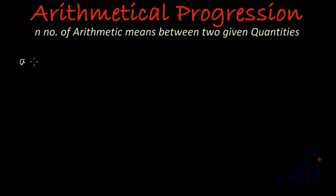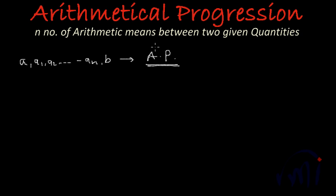If we take any two numbers a and b, and we have to insert n number of arithmetic means between these numbers — a1, a2 are the arithmetic means till an, and b is the last term. If a1 to an are the arithmetic means written in between a and b, then this will form an arithmetic progression. That is the definition of inserting n arithmetic means. To insert these numbers we have to find the common difference d.